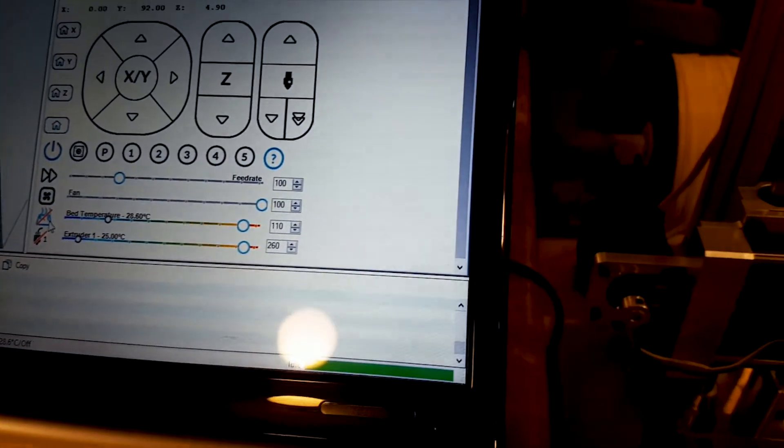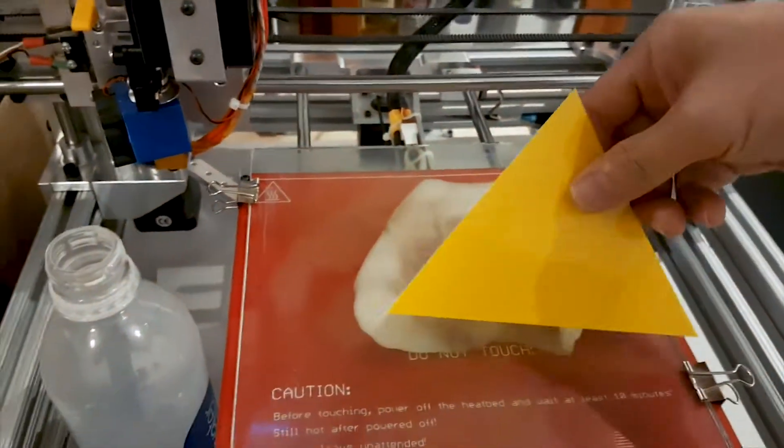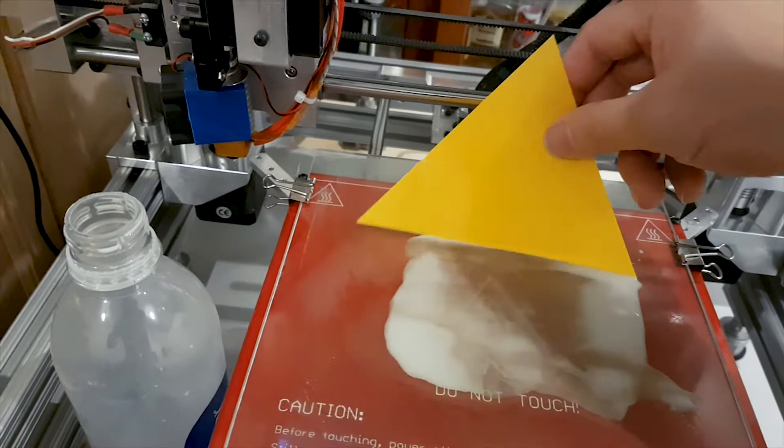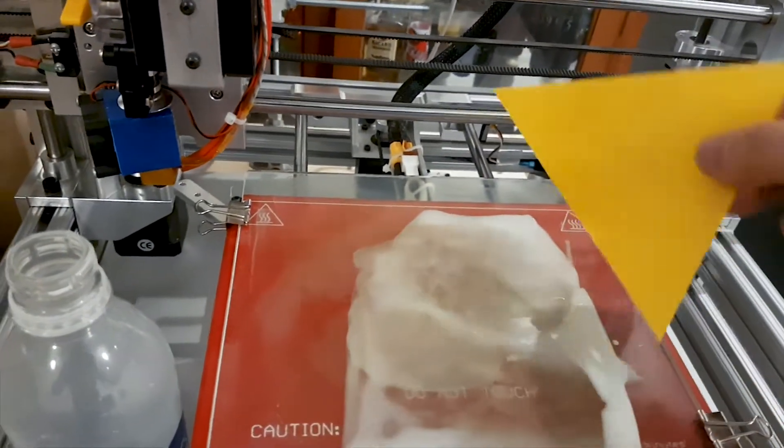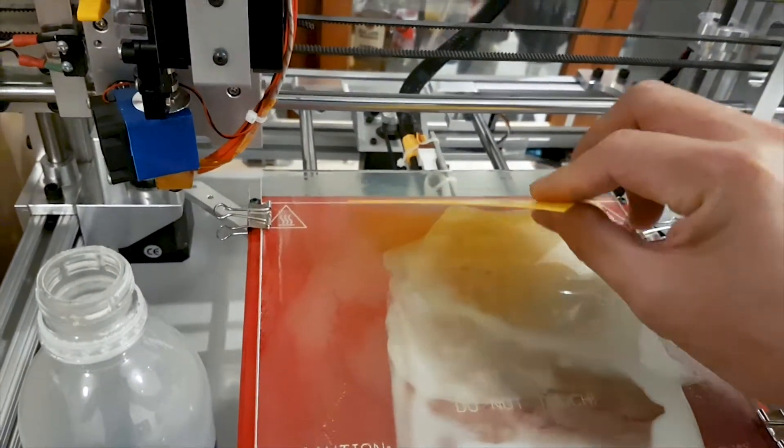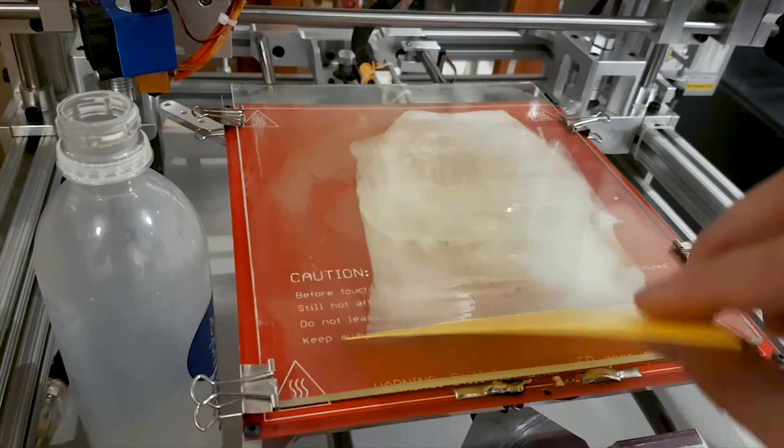So you just spread it like that. It's very hard for me to do with two hands. So there you go, it's a very thin layer of the solution, basically wood glue and water.